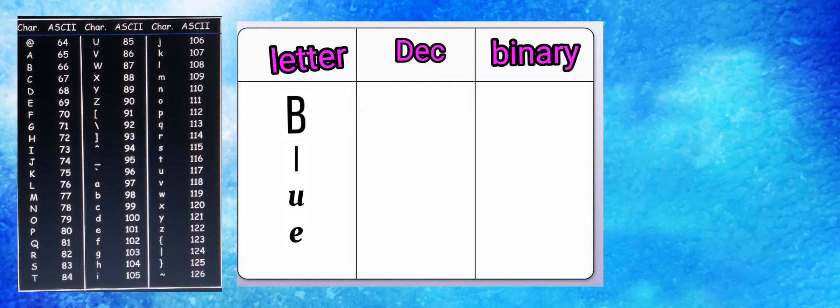We need to pay attention that letter B is capital, and it has a decimal value of 66. Just look at the table. The lowercase L has an ASCII decimal value of 108, U has a value of 117, and E has a value of 101.